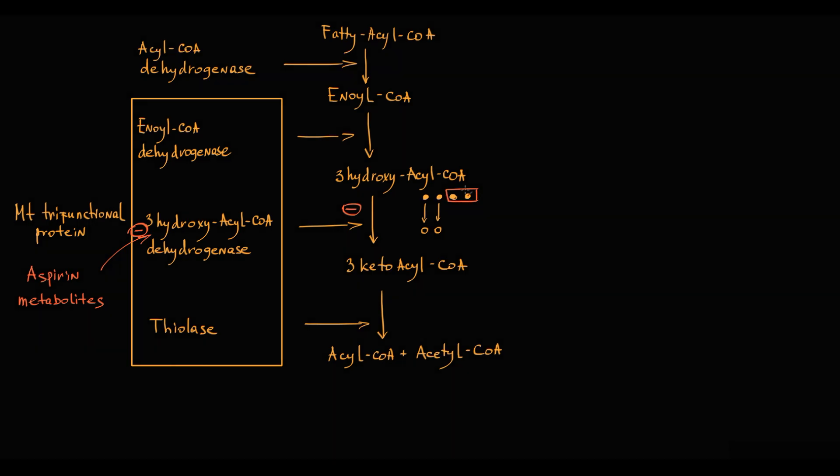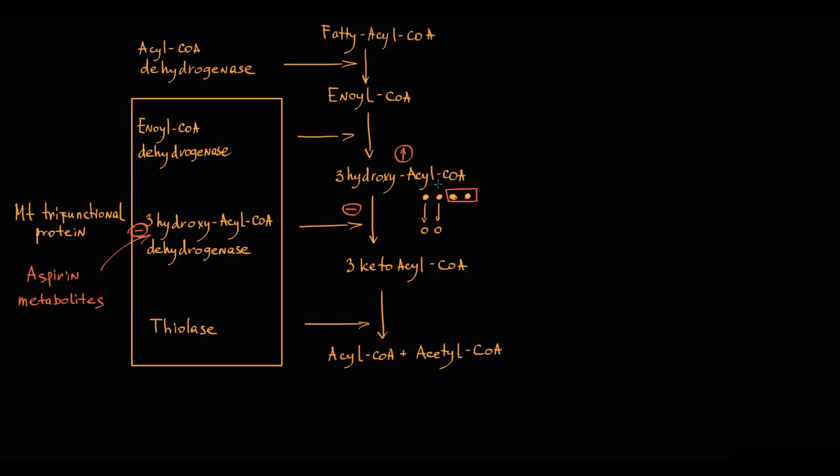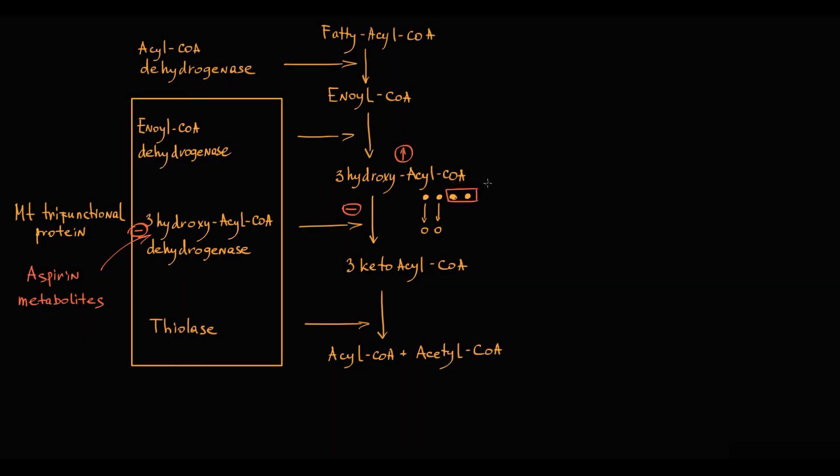Accumulated 3-hydroxy acyl-CoA fatty acids must still be degraded. In this case, degradation occurs by omega oxidation in endoplasmic reticulum. The final products are long-chain 3-hydroxy dicarboxylic acids.